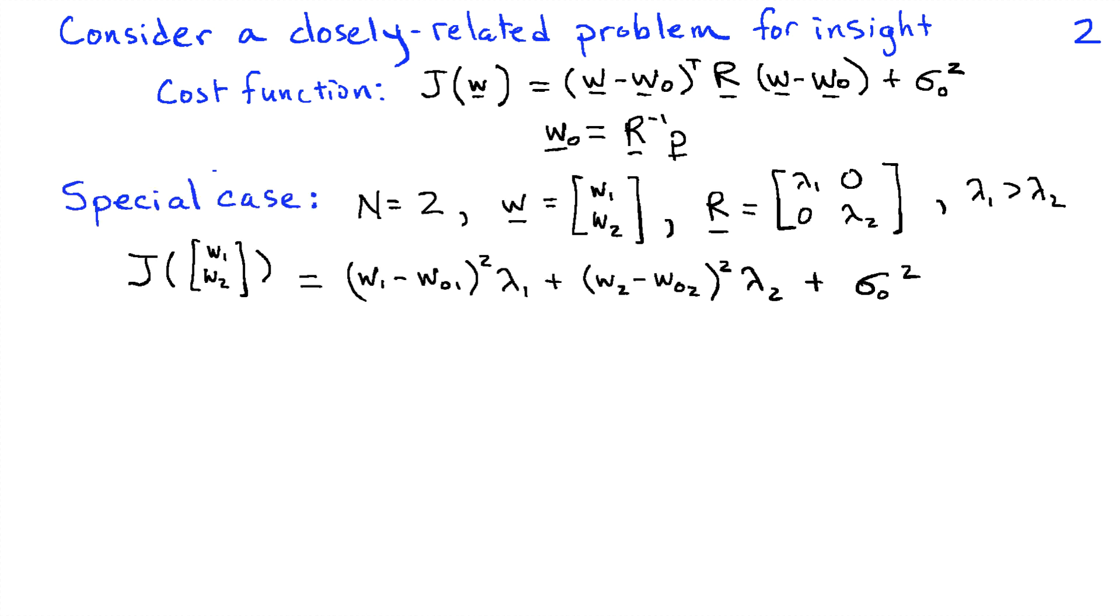Now we're going to look at a special case of this general problem that is sufficient to develop our insight. We're going to consider N equals 2, so we'll only be adapting two weights, and that means we have a W sub 1 and a W2. Those are scalars.